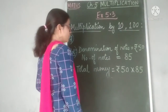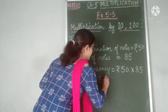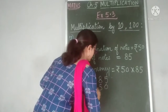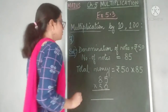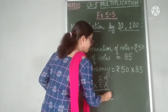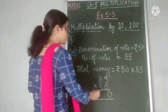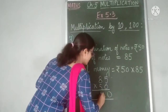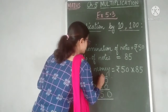So we can solve it as 85 multiplied by 50. We just add a 0 here, because 50 is a multiple of 10, and then we start multiplying by 5. 5 fives are 25 — we write 5 here, then carry 2.